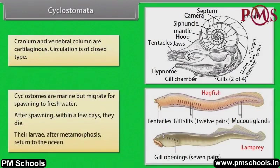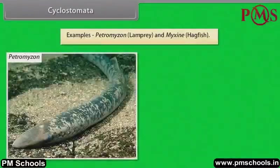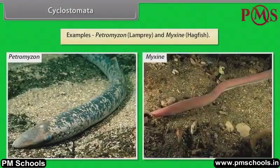Their larvae after metamorphosis return to the ocean. Examples: Petromyzon (lamprey) and Myxine (hagfish).